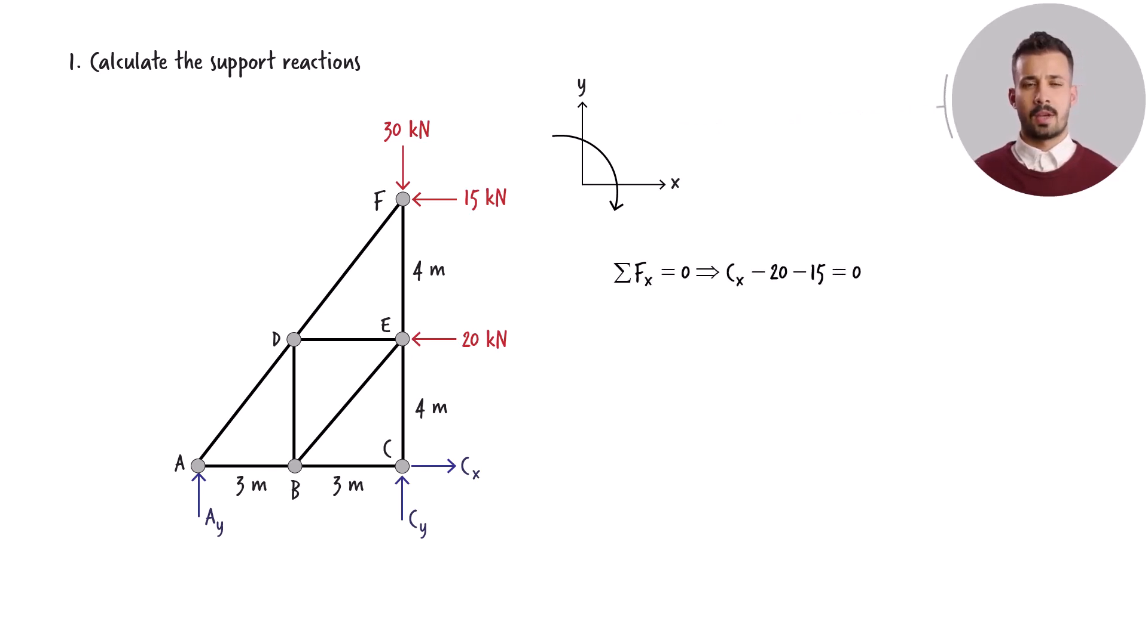Three equations must be formulated: the forces acting in the x-direction, the forces acting in the y-direction, and the moments around the z-axis all have to sum up to zero. For the moment equation, I use C as the reference point. Reaction force Ay has a moment arm of 6 meters, therefore we get 6 times Ay here.